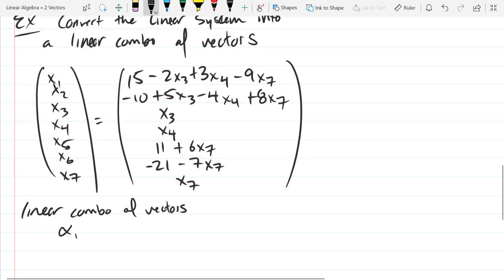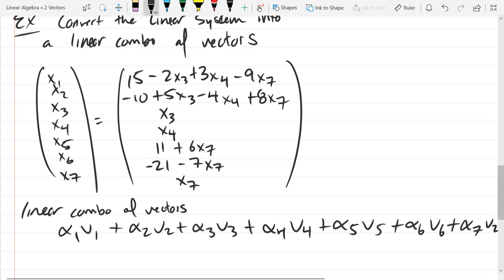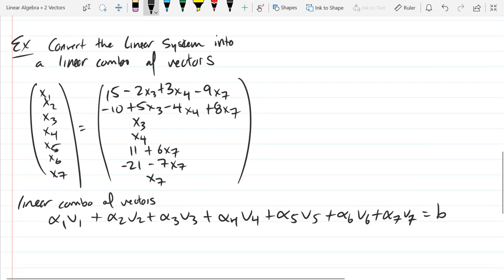We're turning this into a linear combination of vectors. So it's going to look like alpha 1, now it's supposed to be vector 1, not x1, but vector 1, plus alpha 2 v2, plus alpha 3 v3, plus alpha 4 v4, plus alpha 5 v5, plus alpha 6 v6, plus alpha 7 v7, equals vector b.